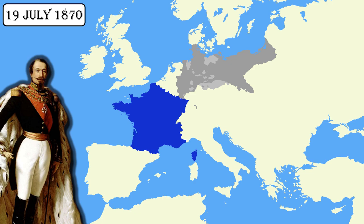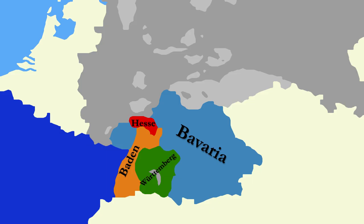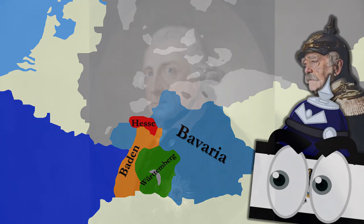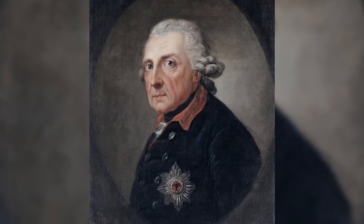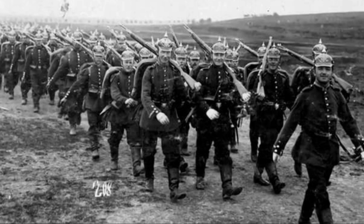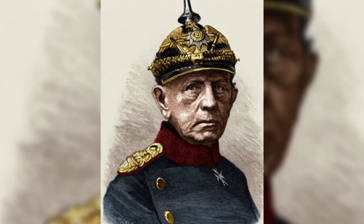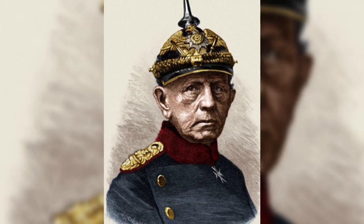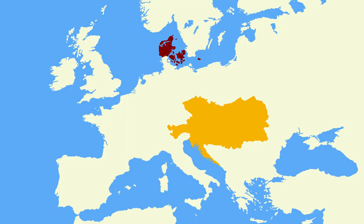As he was now fighting, technically, a defensive war, the southern states put their armies at Bismarck's disposal. Prussia had always been able to punch above her weight militarily, but by 1870 the Prussian Armed Forces, already one of the most well-organized in the world, had been significantly reformed and expanded under the leadership of Helmuth von Moltke the Elder, the Prussian chief of general staff — not to mention it had recent experience against the Danes and Austrians.